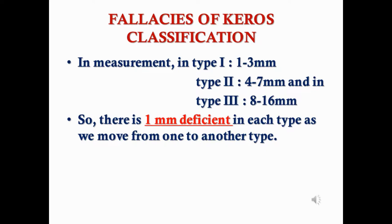Though there are advantages, there are also certain fallacies in the Keros classification. In measurement, Type 1 is 1 to 3 mm, Type 2 is 4 to 7 mm, and Type 3 is 8 to 16 mm — leaving a 1 mm gap between each type. It is difficult to classify cases where the height is 3.5 mm, 7.5 mm, or between 7 to 8 mm. This ambiguity in boundary cases is the main fallacy of the Keros classification.